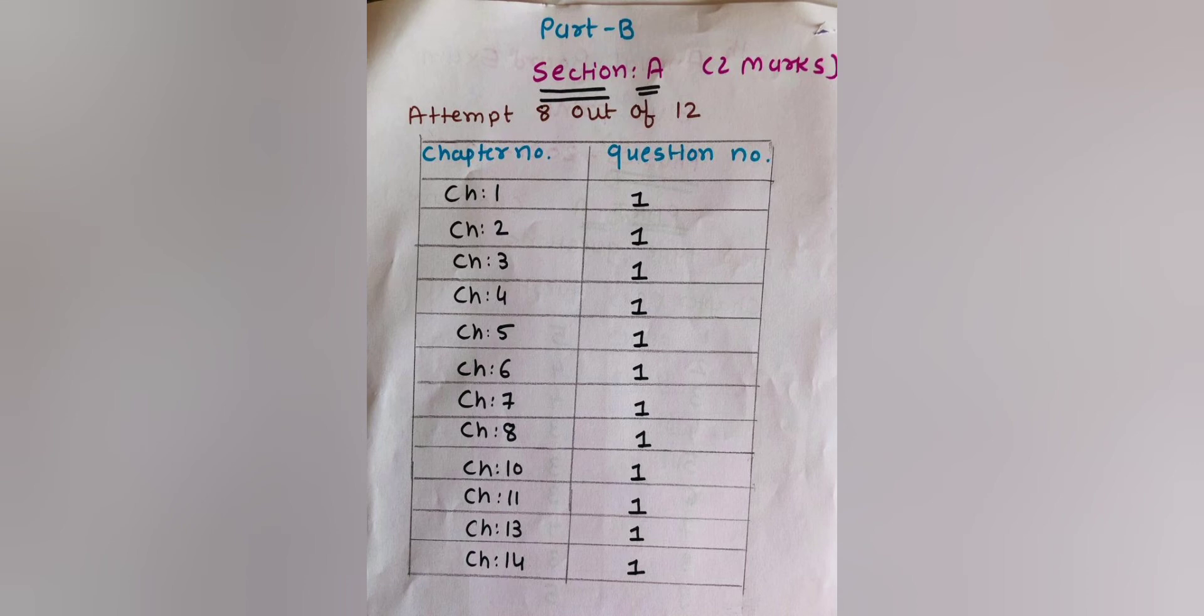Now, Section A from Part B covers 2 marks questions. You have to attempt any 8 out of 12. From Chapters 1, 2, 3, 4, 5, 6, 7, 8, 10, 11, 13 and 14, one question will be asked from each.